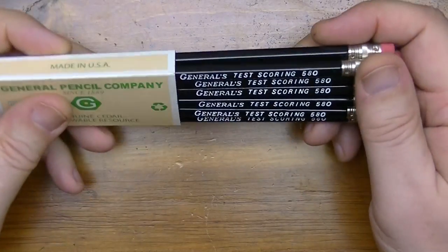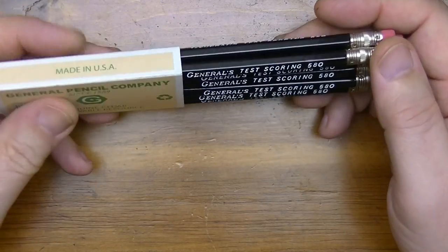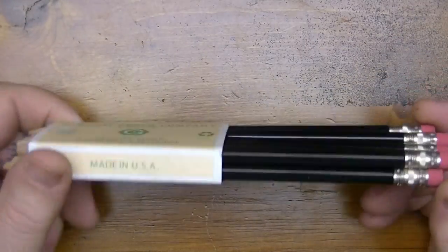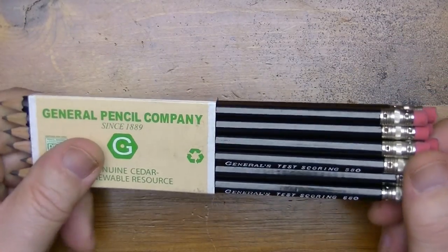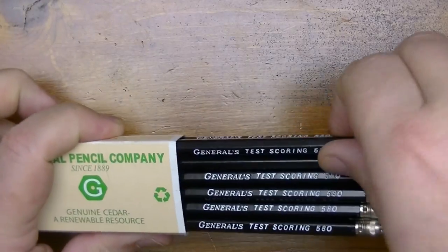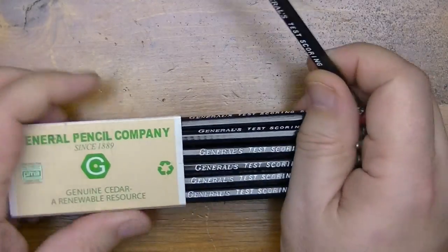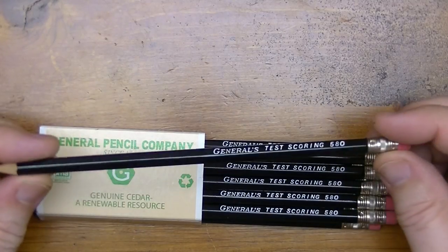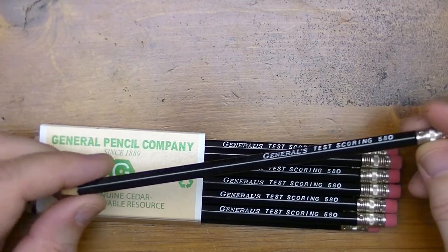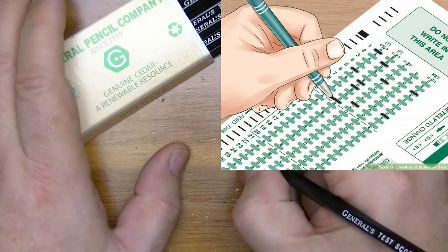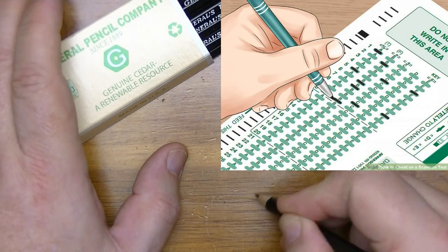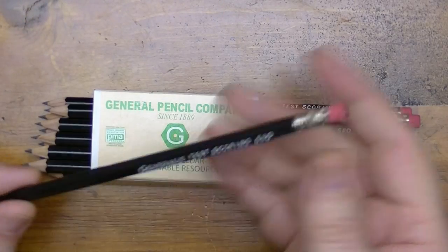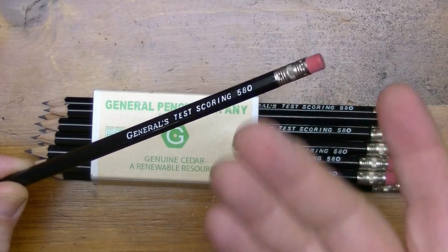Alright, well here it is, finally going to be taking a look at the General's Test Scoring 580 Pencil. Many call it the original Test Scoring Pencil. It is supposed to be a soft, dark, somewhat reflective type of pencil for the Scantron testing. You know when you were in school and you had to scribble in those little bubbles with your pencil. Well, that's what pencils like this were originally made for.